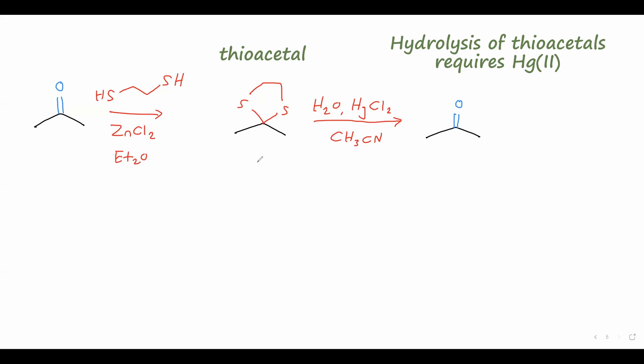Another interesting property of thioacetals is that they can be catalytically hydrogenated. These are similar conditions to what we've seen before using hydrogen gas and Raney nickel as a catalyst. This actually hydrogenates the acetal carbon, giving us the base hydrocarbon chain as a product. This is a process called desulfurization, and it is one way to take a carbonyl compound and simply remove the carbonyl group in two steps, reducing the starting material down to the hydrocarbon.